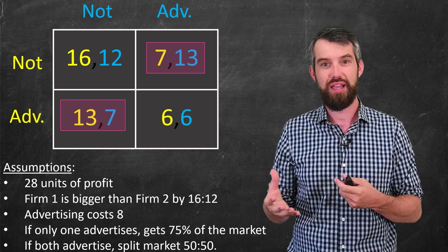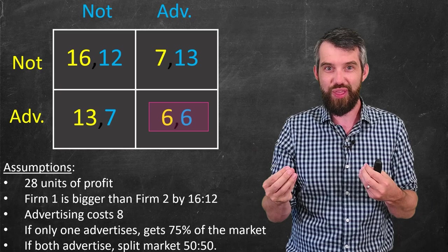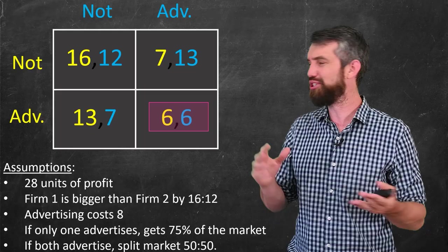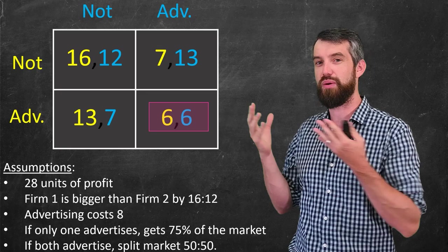And then finally, I'm going to assume that if they both were to advertise, it's going to cost them both 8 units. And they take the 28, they split it up 14-14. It's 50-50 if they both advertise. But you subtract off the 8 from each, and you get to 6-6. Regardless, a bunch of quasi-realistic assumptions for an economic scenario that lead to this particular matrix.